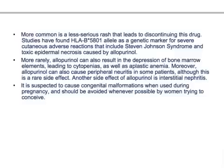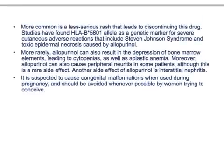More rarely, allopurinol can result in depression of bone marrow elements, leading to cytopenia as well as aplastic anemia. Allopurinol can also cause peripheral neuritis in some patients, although this is a rare side effect. Another side effect is interstitial nephritis. It is suspected to cause congenital malformation when used during pregnancy and should be avoided whenever possible by women trying to conceive.